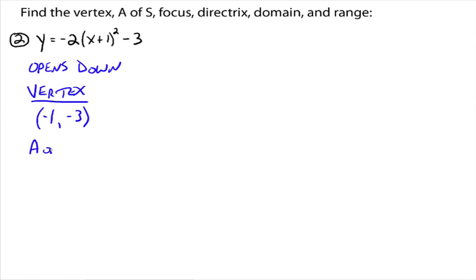The axis of symmetry, we now automatically know. Since this is a parabola that opens down, the axis of symmetry is x equals the x part of the vertex. So x equals negative 1. So what's c? 1 over 4c has to equal negative 2. That implies that c is negative 1 eighth.